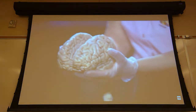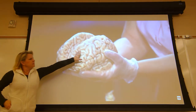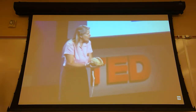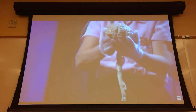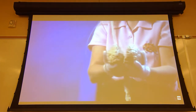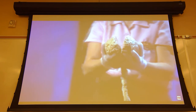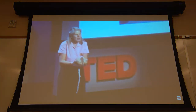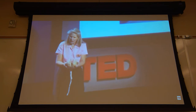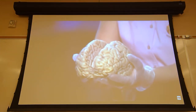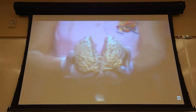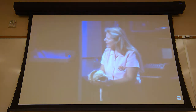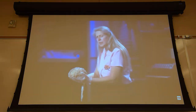For those who understand computers: our right hemisphere functions like a parallel processor, while our left hemisphere functions like a serial processor. The two hemispheres communicate through the corpus callosum, made up of some 300 million axonal fibers, but otherwise are completely separate. Because they process information differently, each hemisphere thinks about different things, cares about different things, and — dare I say — they have very different personalities.